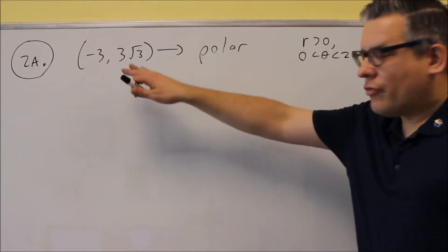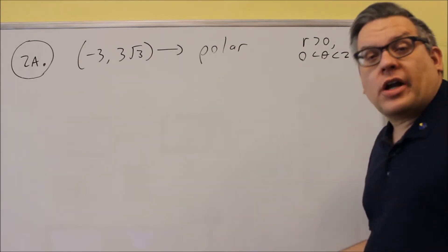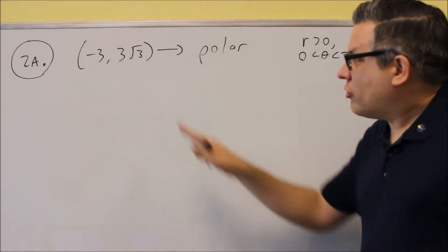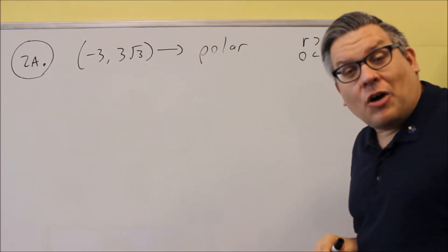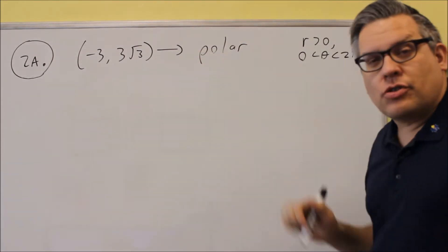Number two is going to have you convert a rectangular point into polar, or they might have you go polar back to rectangular. So you want to make sure you know how to go both directions. The first one we'll do for A has us go from rectangular into polar.